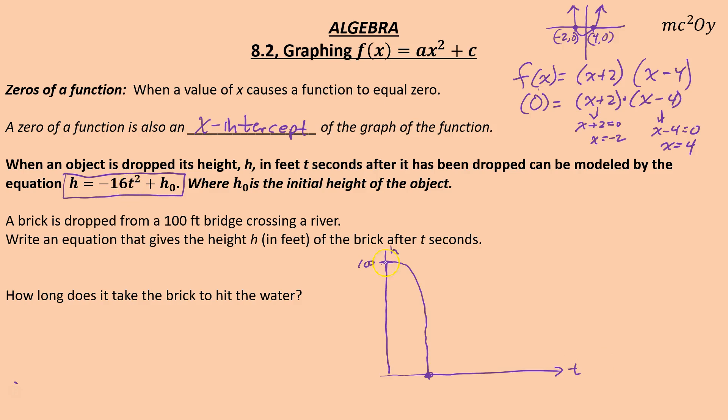We're going to write the equation by substituting H₀ from our problem here. Our starting height is 100. So write the equation. Well, that's going to be H = -16T² + 100. Now, if we want to actually solve it, how long does it take for the brick to hit the water? Well, when the brick hits the water, our height's no longer 100. It's 0. So we're going to substitute 0 in for H and then solve our equation.